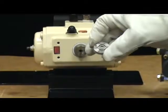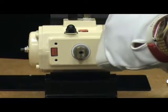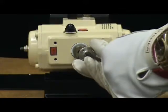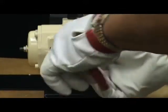In mounting a DVC 6200 to the quarter turn actuator, we must first attach the coupler to the actuator shaft. This is done with one allen head bolt.